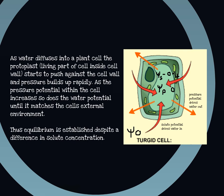Eventually, water keeps flowing into the cell until it reaches a point where the pressure potential is 0.4. Now the overall water potential inside the cell is also zero. We've got a water potential of zero outside the cell and zero inside the cell, because the pressure potential is compensating for the solute potential — we've now reached equilibrium, and there will be no net movement of water in or out.